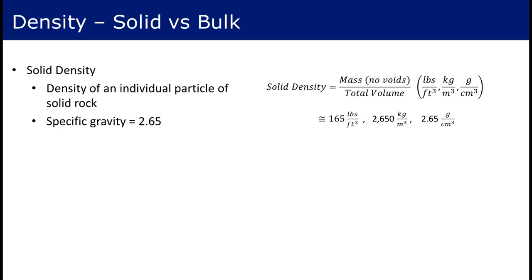Another way to state the solid density of sediment is to refer to its specific gravity, which is the ratio of a volume of sediment to an equal volume of water. A specific gravity of 2.65 is commonly used as it correlates to 165 pounds per cubic foot.